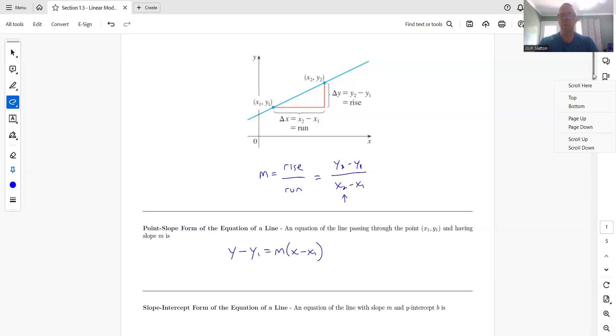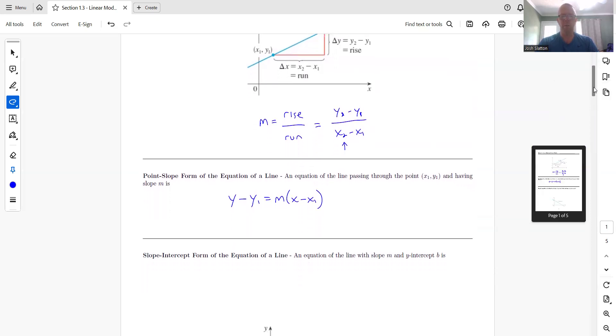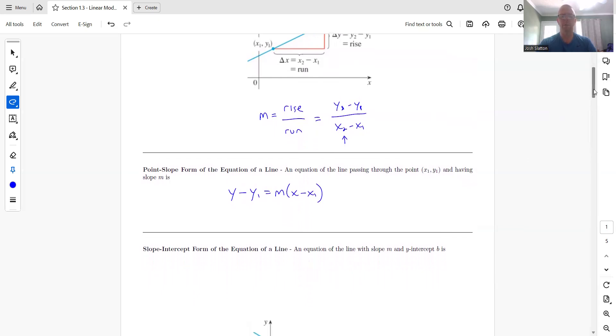And so then we also have slope-intercept, which everyone knows this. So an equation of the line with slope m and y-intercept b is, of course, y equals mx plus b, which we all know this.